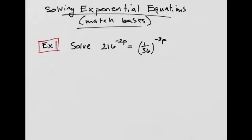First thing I see is there's a fraction here, and I don't really want that. But I also have a negative. So if I have a negative, I can flip this over, and then it becomes positive - 36 over 1, which is just 36. And then this becomes a positive 3p.